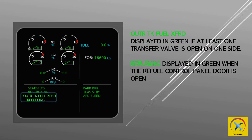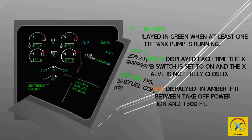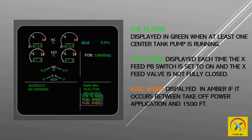Refueling is displayed in green when the refuel control panel door is open. Center tank feed is displayed in green when at least one center tank pump is running. Fuel cross feed is displayed each time the cross feed push button switch is set to on and the cross feed valve is not fully closed. Fuel cross feed is displayed in amber if it occurs between take-off power application and 1500 feet.